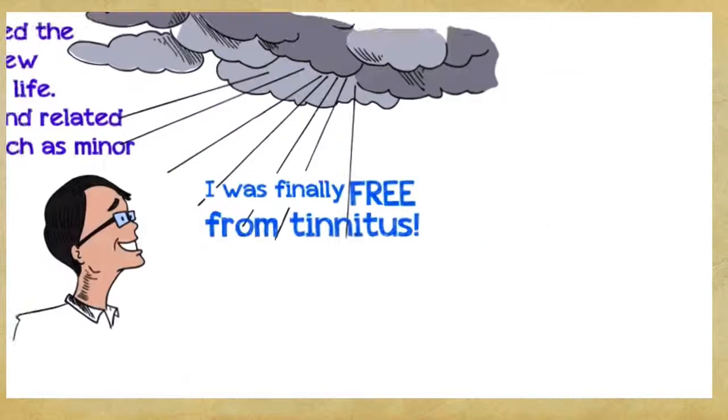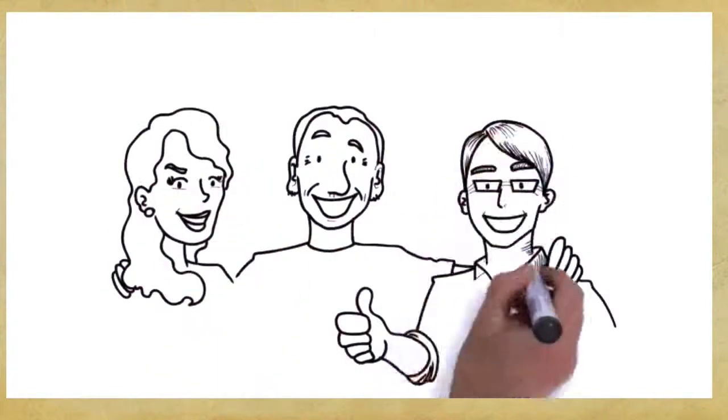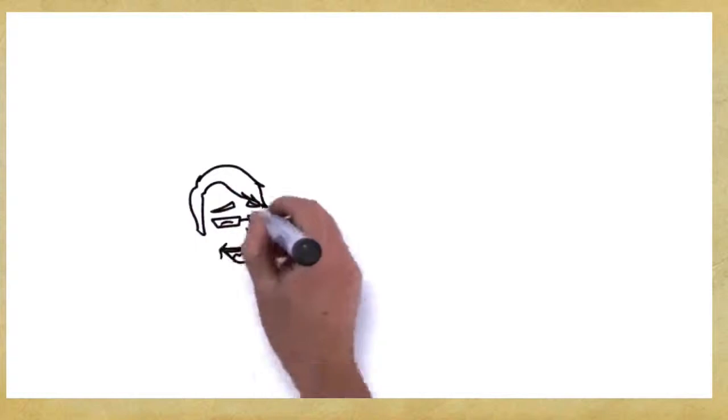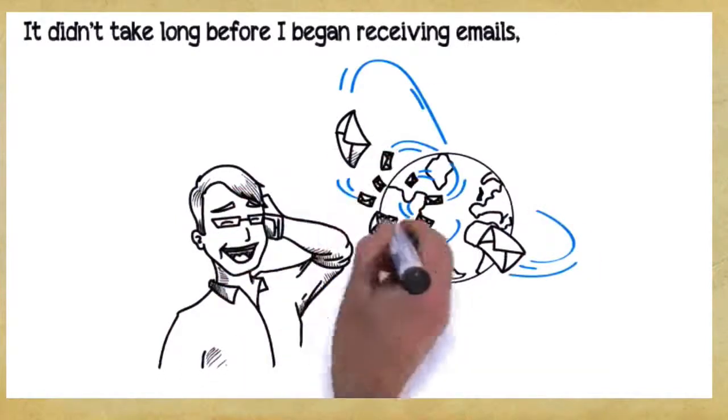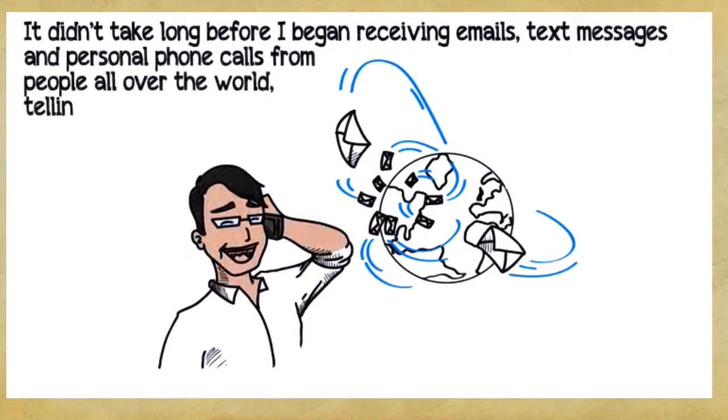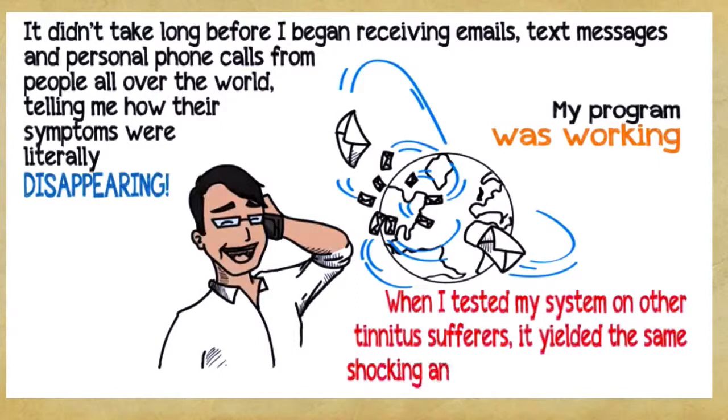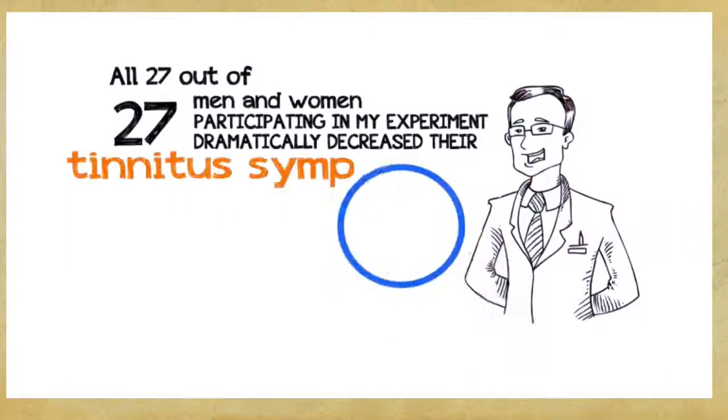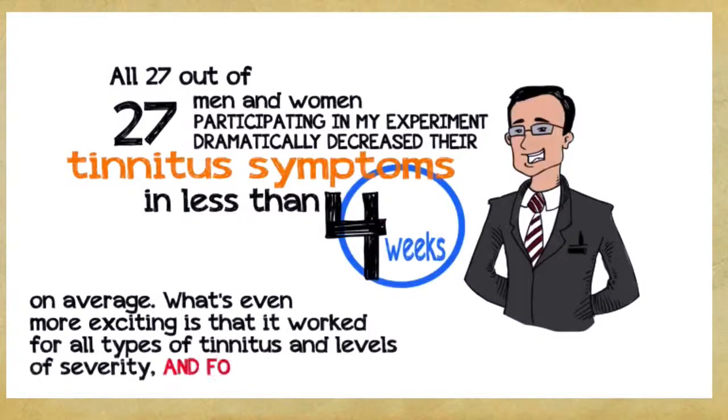Since I'd been on multiple blogs and various tinnitus groups for years, it wasn't difficult to find other people willing to give my treatment a try. What I was offering was a completely safe alternative to all of the dangerous treatments offered by the medical community. I sent off my five-step protocol to several dozen tinnitus sufferers and waited for them to tell me how it worked. It didn't take long before I began receiving emails, text messages, and personal phone calls from people all over the world telling me how their symptoms were literally disappearing. My program was working and more and more people were asking me for help. When I tested my system on other tinnitus sufferers, it yielded the same shocking and groundbreaking results. All 27 out of 27 men and women participating in my experiment dramatically decreased their tinnitus symptoms in less than four weeks on average. What's even more exciting is that it worked for all types of tinnitus and levels of severity and for men and women of any age.